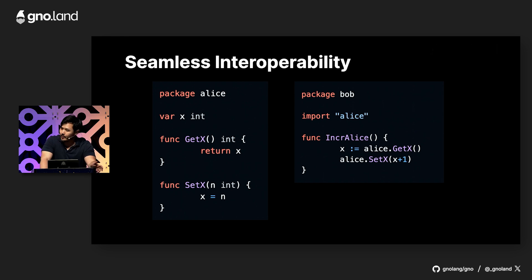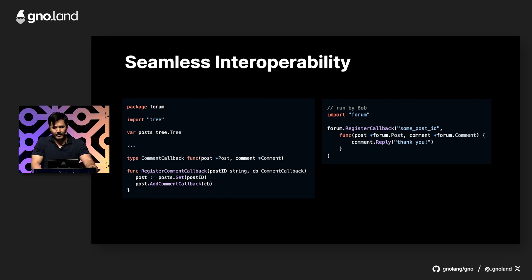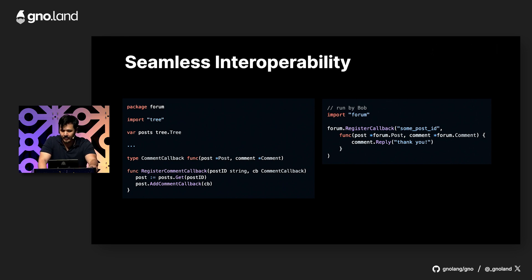How can we make these two programs just work the way we want? Going even further — on the left, Alice has a program that represents a forum, and on the right, Bob is registering a callback function to thank every commenter on his post. Tools like gRPC pass parameters that are simple messages of structured data, but they don't allow passing more dynamic data like closures or callback functions. And even if they did, it would be more complex and you'd have to deal with network failures. There's still the issue of persisting data to disk.